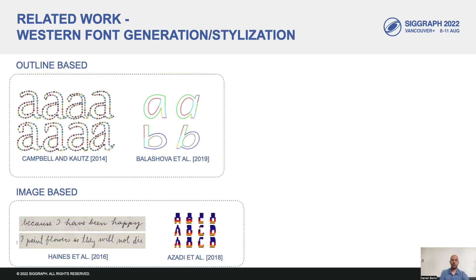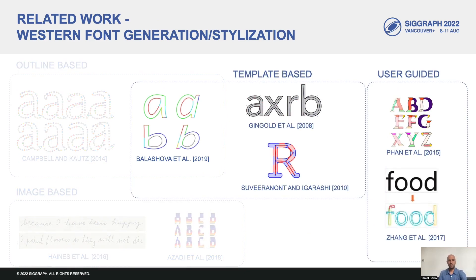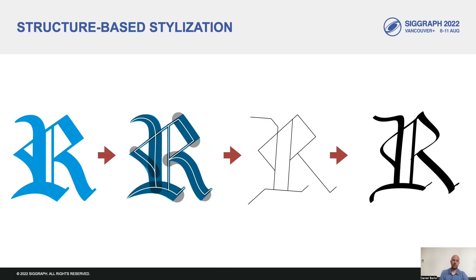Most existing works that generate stylized text are either outline or image-based, or rely on either user guidance or templates to recover a stroke structure from a glyph outline. Our method is different from most of those, as it uses an automatic stroke decomposition to produce structure-based stylizations.